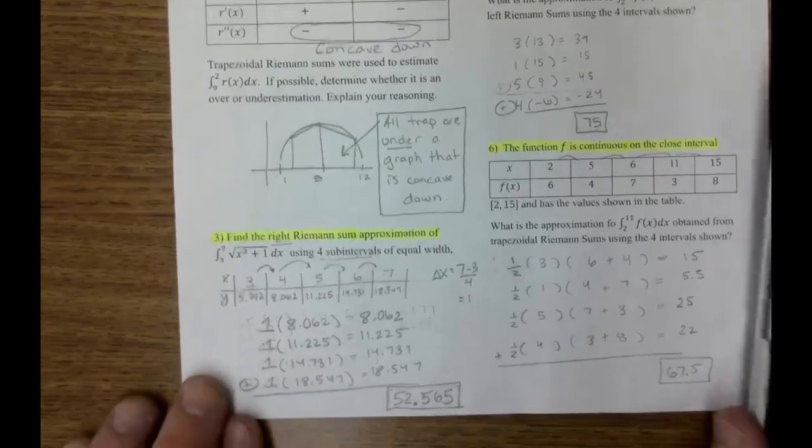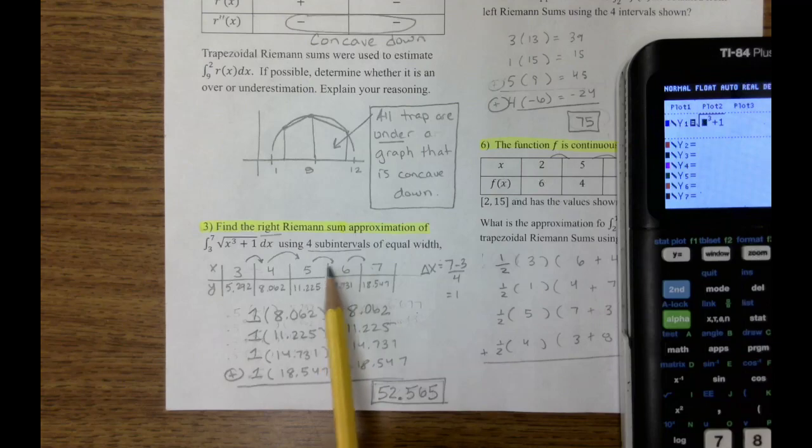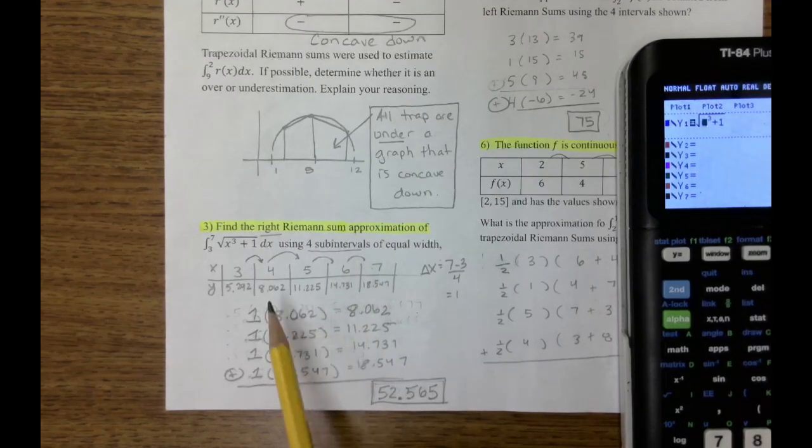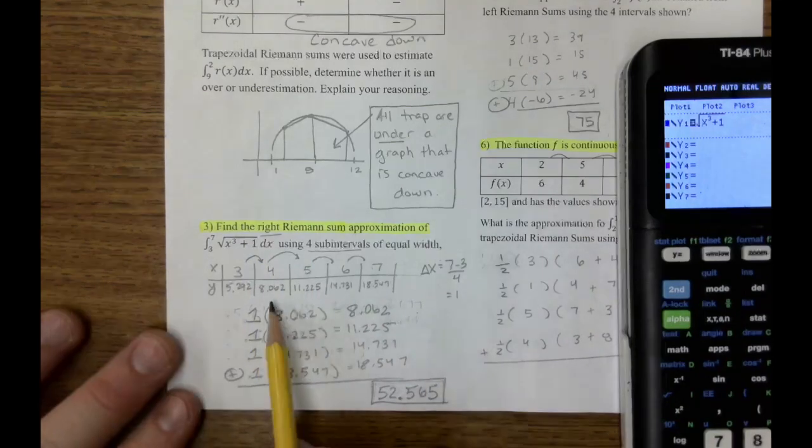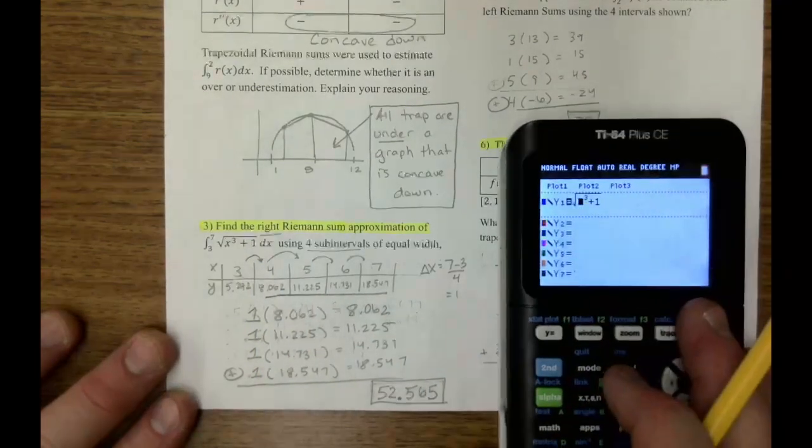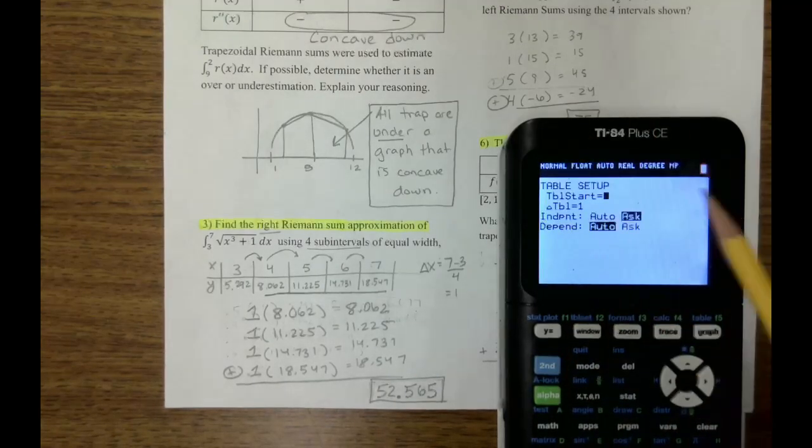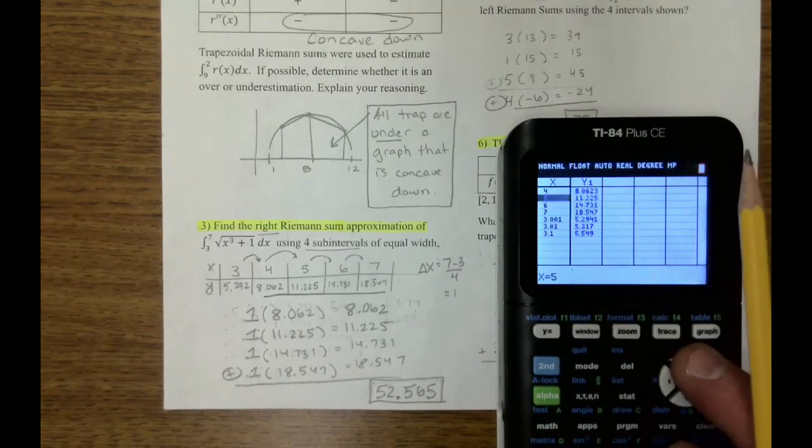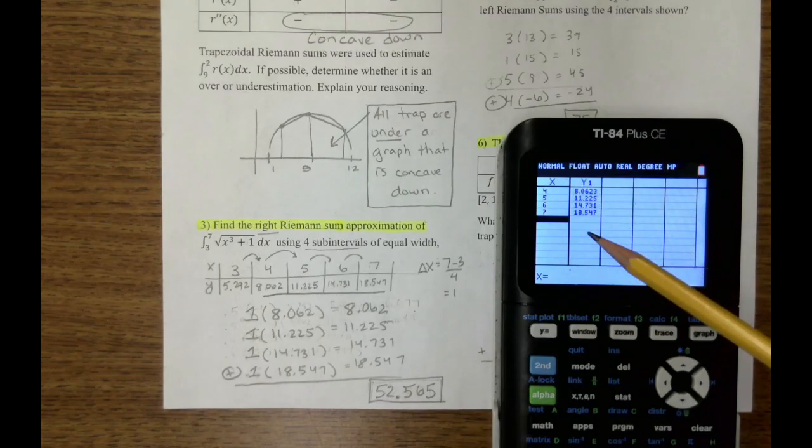So that right there is going to give me my four rectangles. I have a rectangle between these two, these two, these two, and these two. So now I'm going to do my lengths and my widths. Well, all of my widths here are one. Now my length is, I need the height of this function from the right, so I'm going to use these right Riemann sum values. Well, to get them, if you have your calculator here, if you set up your table to ask, and you put in the table, four, five, six, seven, then those are your four outputs. Those are the heights of your rectangle.